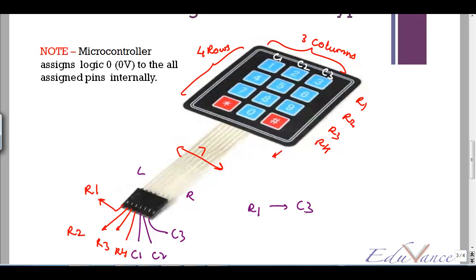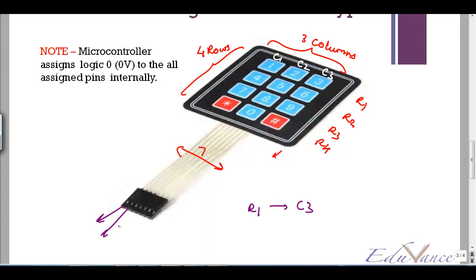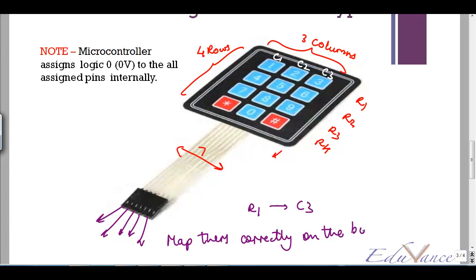This is very important because when you will connect these terminals, you need to make sure that you connect them accordingly and map them correctly on the board and in the program. So again, from left hand side it starts off at R1, R2, R3, R4, C1, C2, C3.